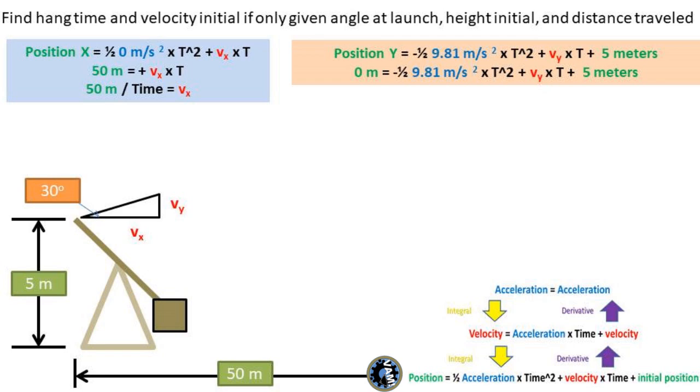Now, if there's only a way that we can relate v sub x to v sub y, so we can plug v sub x into the position of y formula. Looking at the diagram, the launch angle is a right triangle. This means that the tan of 30 degrees equals velocity sub y over velocity sub x. Rearranging this, we get v sub x times tangent of 30 equals v sub y.